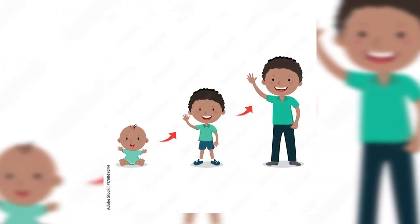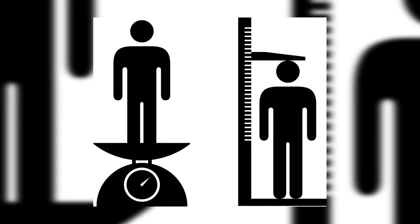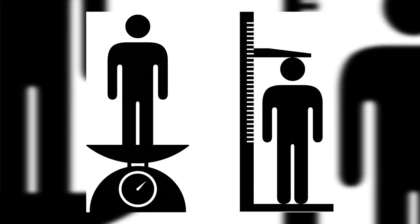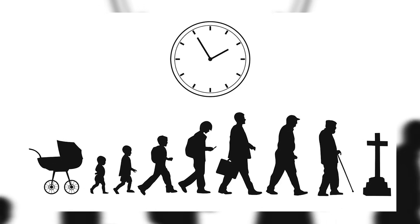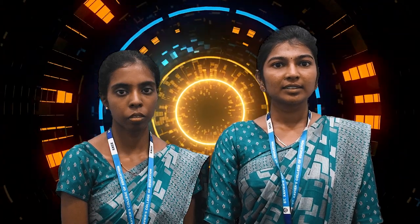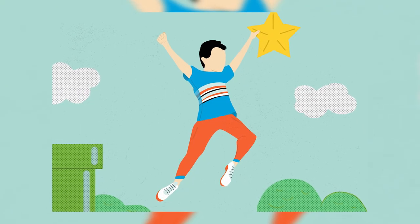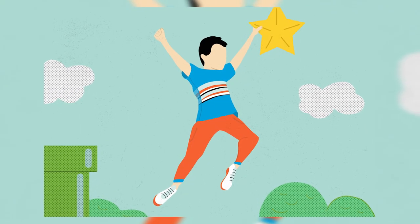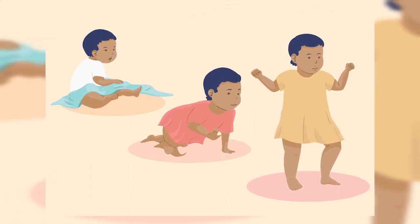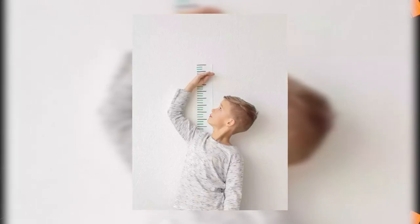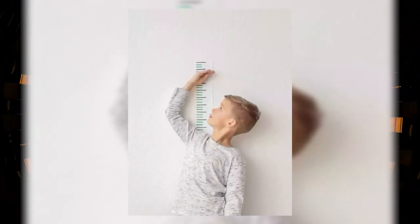First, we will see about physical development. Physical development refers to the changes that occur in an individual's body size, shape and functioning. These changes are often measured in terms of height, weight and other physical characteristics. Physical development begins at birth and continues throughout a person's life. Physical development is very rapid from birth to the age of 2 or 3 years. The first 3 years of adolescence are marked as the year of rapid growth and development.